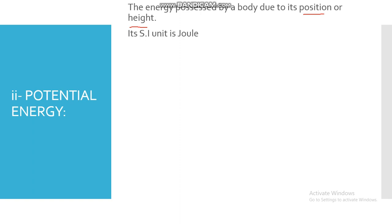The SI unit of potential energy is Joule. Mathematically its formula is: potential energy equals mgh, where m represents mass, g represents gravity, and h represents height.